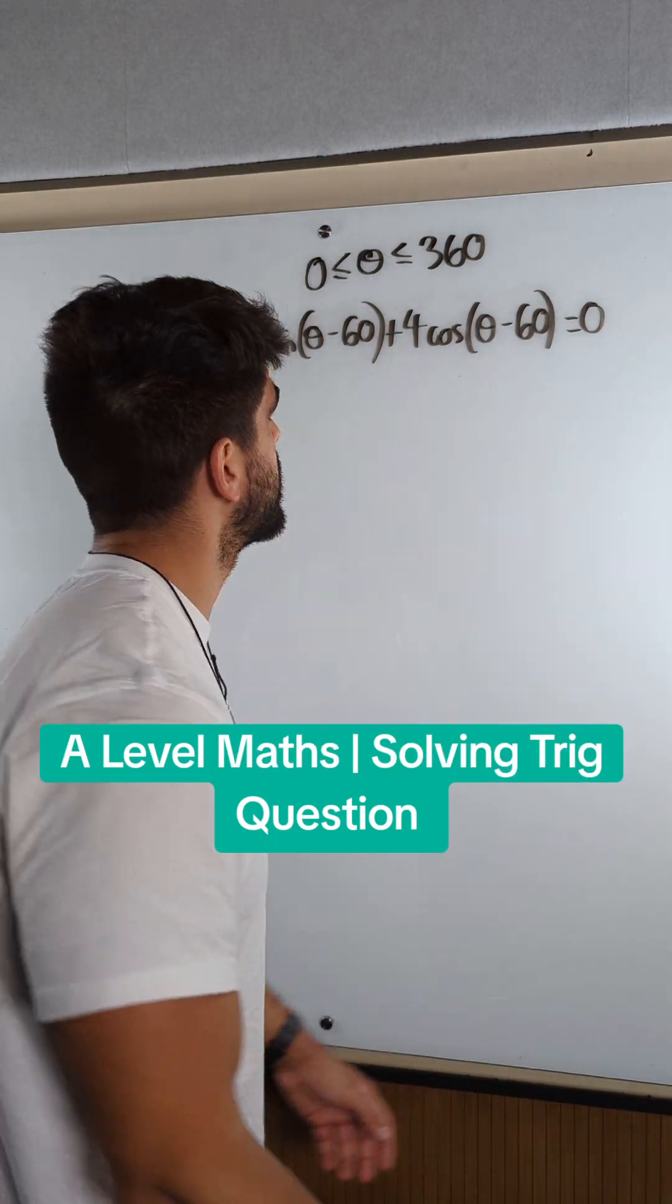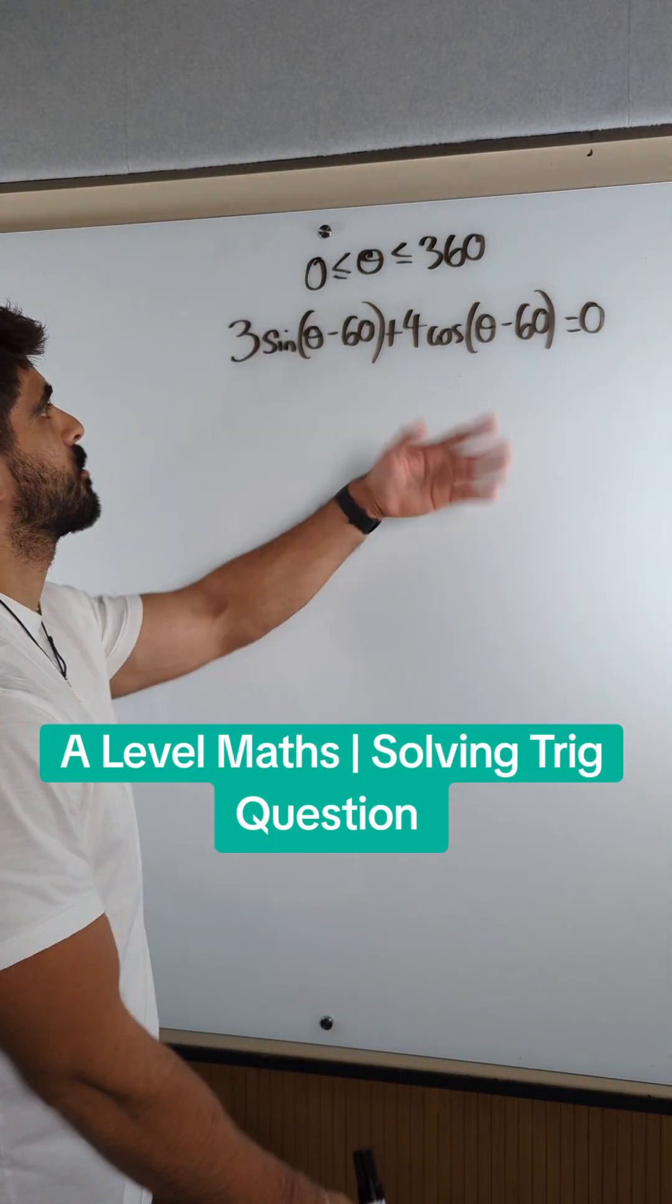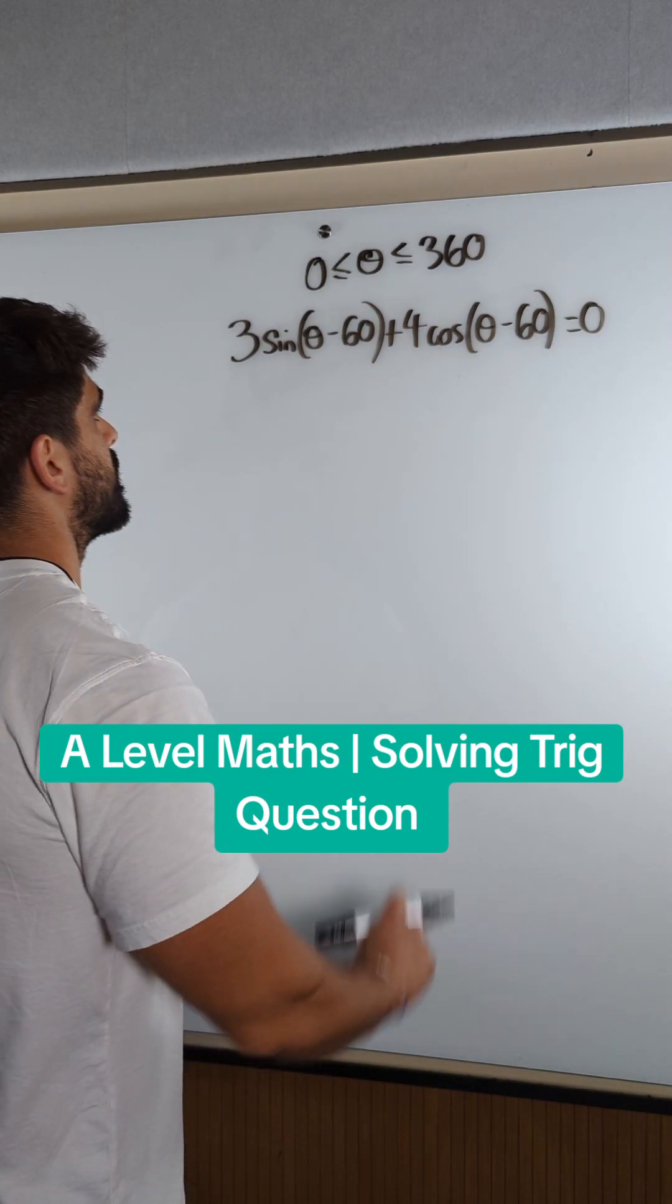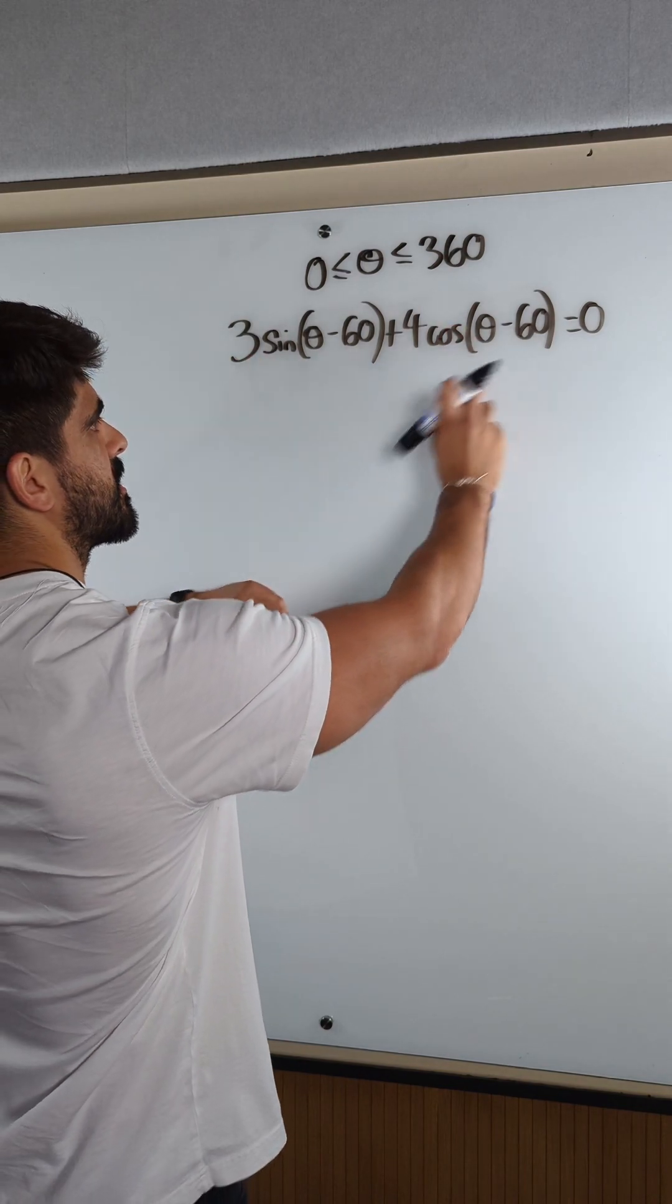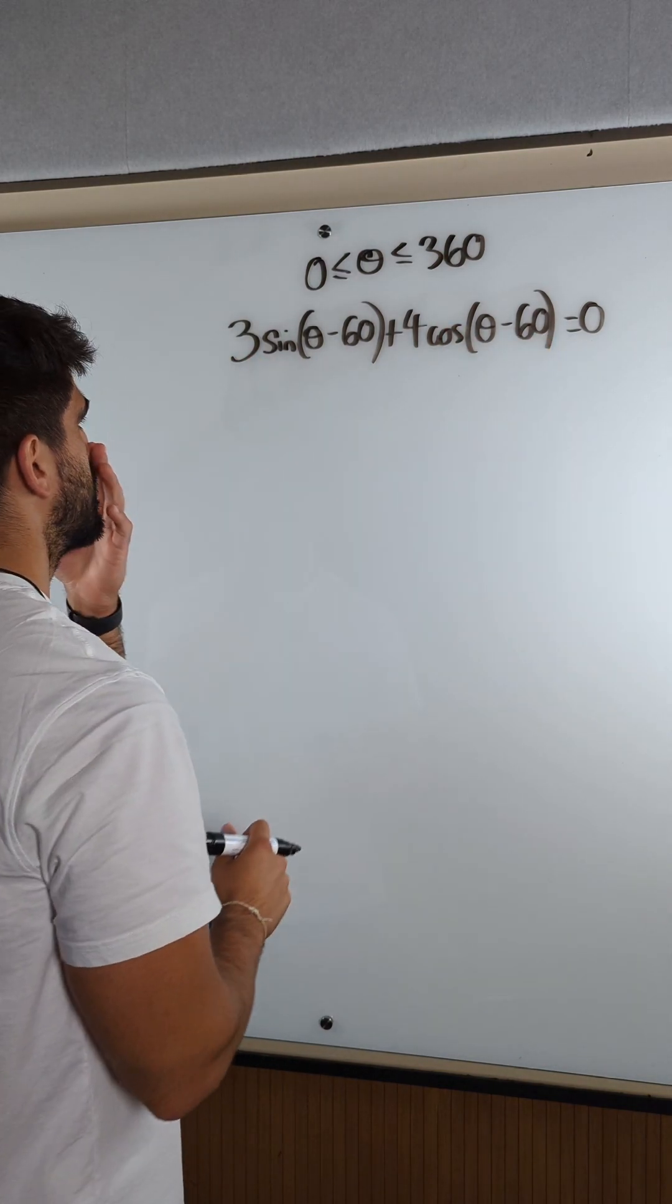Trigonometry. Solving this, we've got this equation between 0 and 360. When sine and cos are singular, meaning non-quadratic, none of that stuff, and equals 0, we're just going to turn everything into tan.